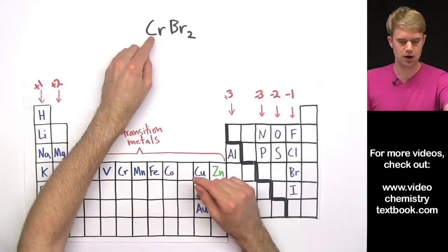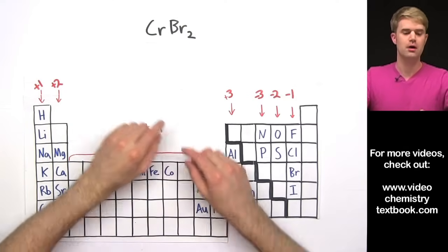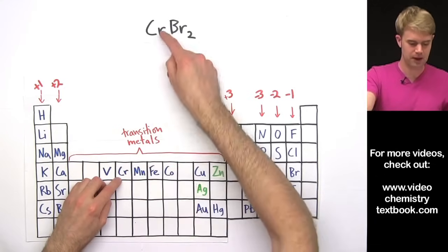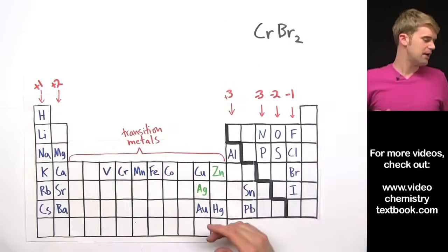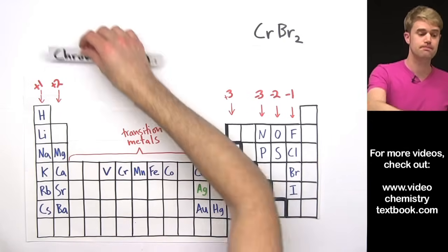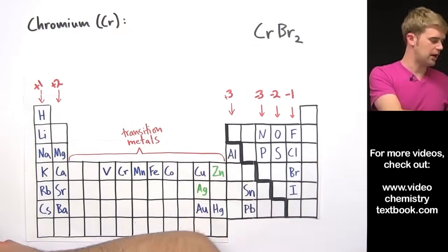Here's our first example, CrBr2. So Cr here is chromium. It's a transition metal and like many transition metals, chromium can make a variety of ions with different charges. Chromium can make three ions: Cr2+, Cr3+, and Cr6+.